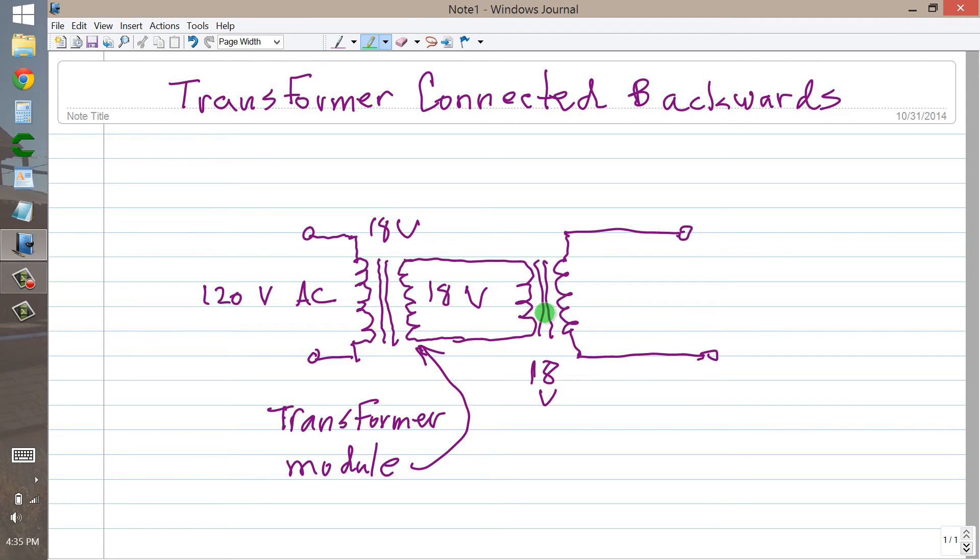And then I just reversed this second module and pumped that 18 volts into the secondary winding of the second module. And, lo and behold, indeed, I did get, when I measured it, 120 volts AC at the output.